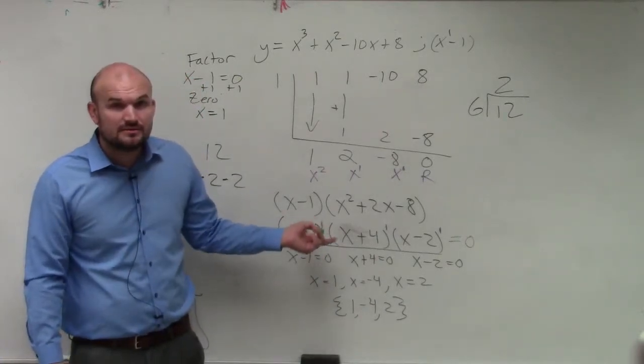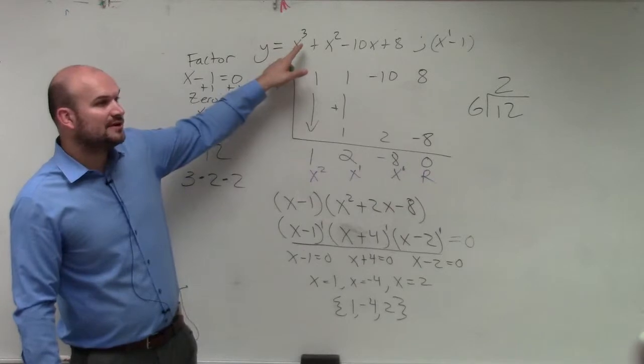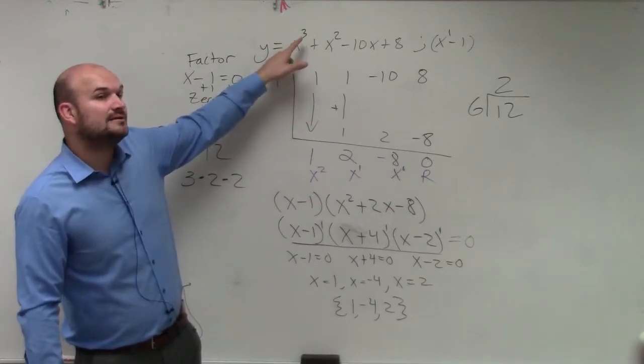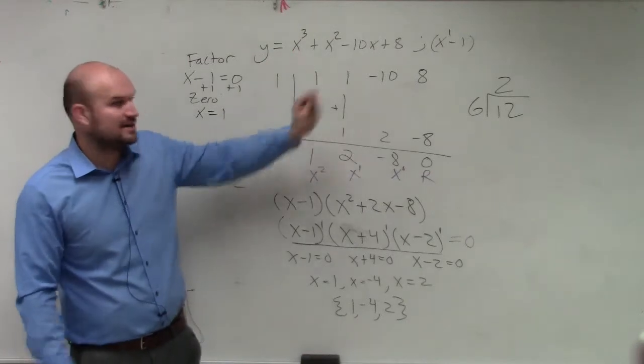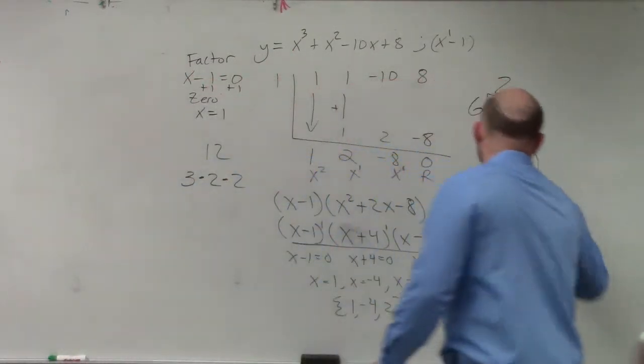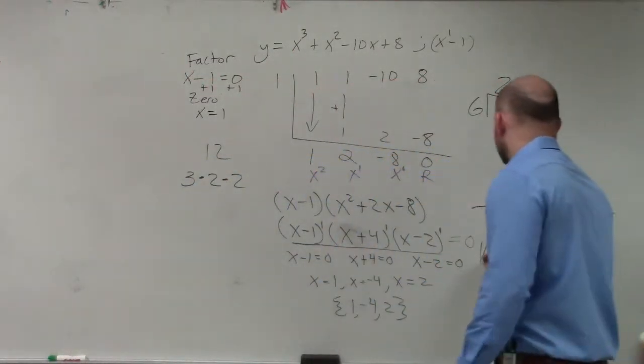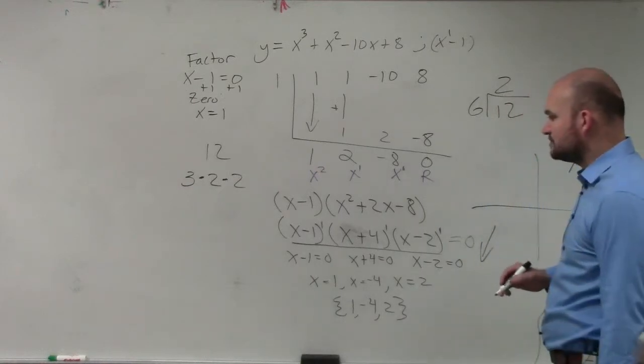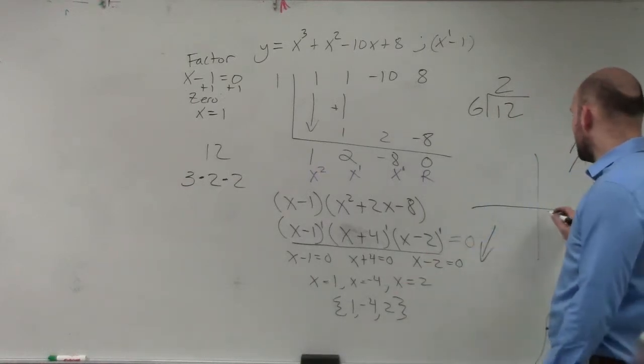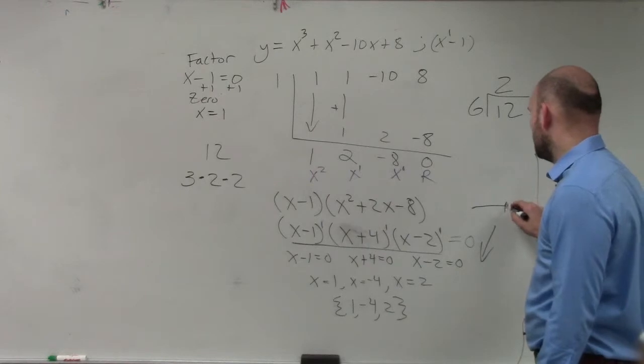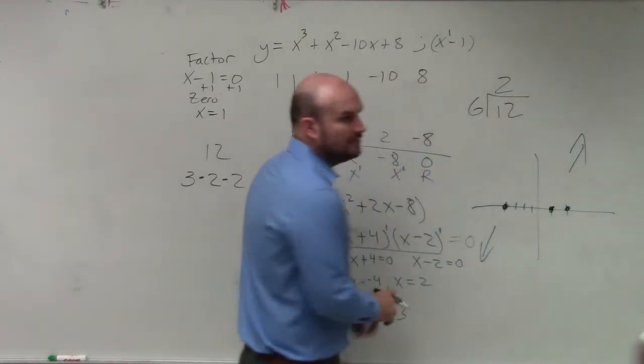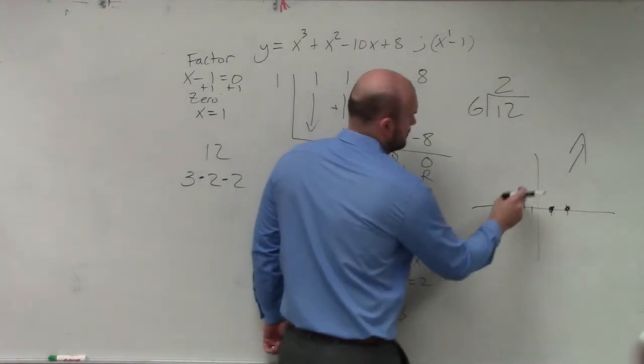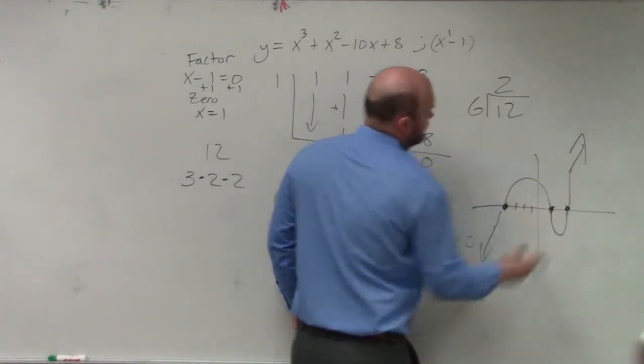Could we graph this? Yes. What is the end behavior? Well, since it's odd, and the leading coefficient is positive, the graph falls left, rises right. Again, this isn't what the question was asking, but I'm really trying to connect everything with you guys. So we know the graph looks like this. Then the zeros are at 1, 2, 3, 4, negative 4, and at 2, right? There we go.